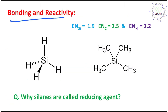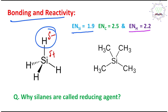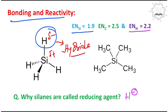Now let's discuss bonding and chemical reactivity. Please look at the electronegativity values: in the case of silicon, the electronegativity is 1.9, whereas hydrogen's is 2.2. From this clear difference, we can conclude about the polarity of the silicon-hydrogen bond. Hydrogen is δ⁻ and silicon is δ⁺, and that is the reason we can see that this is a hydride character — silicon hydride. That's why silanes are capable of providing hydride (H⁻), like sodium borohydride.